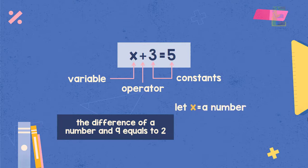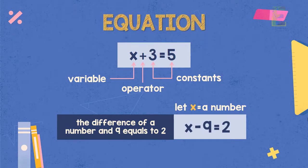And because it is stated in the phrase that a difference of a number and 9, so our operator will be subtraction. So our equation will become x minus 9 is equal to 2. So that's what equation is all about.